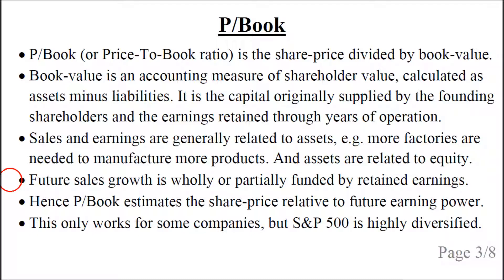Future sales growth is wholly or partially funded by retained earnings. So the price-to-book ratio estimates the share price relative to future earning power. This only works for some companies, but the S&P 500 is highly diversified, so on average we expect this to work.